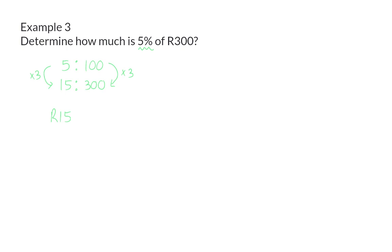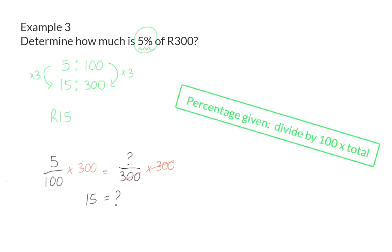Once again, you could have chosen to make use of fractions and equations by saying that 5% is 5 over 100, and we need to determine what value out of 300 gives us this 5%. Here, the algebra would mean that our next step is multiplying by 300 on both sides, so that we can simplify on the right-hand side and determine what value will give us this 5%. And here, you'll also get 15 Rand. This time, we can make the conclusion that when the percentage is given, you can start off by writing that as a fraction by dividing it by 100 and then multiply by the total amount.